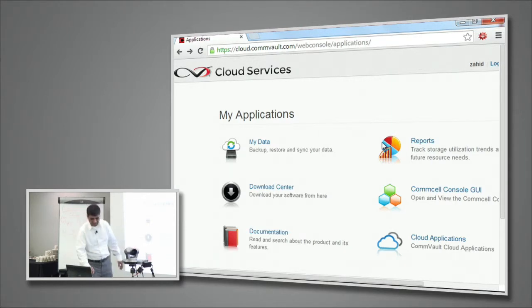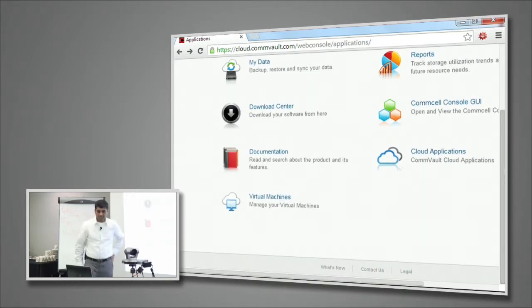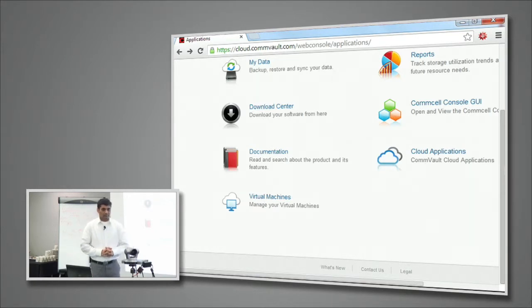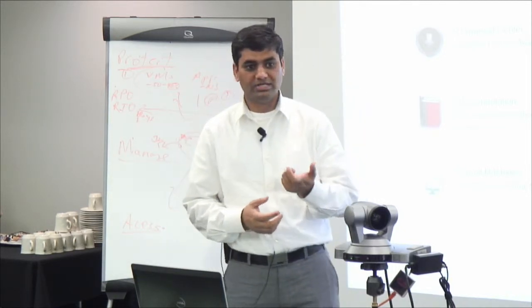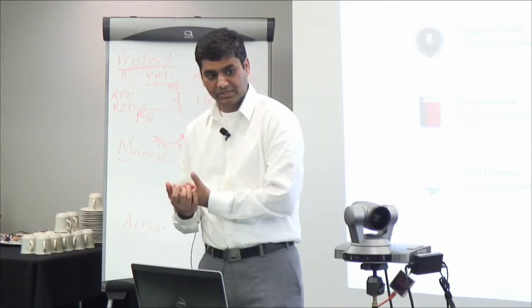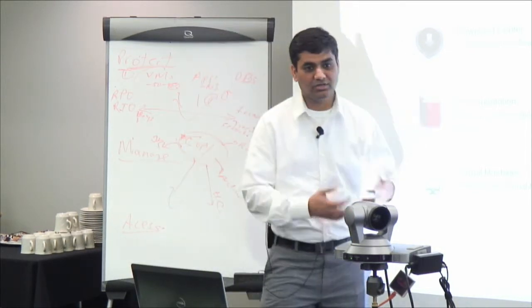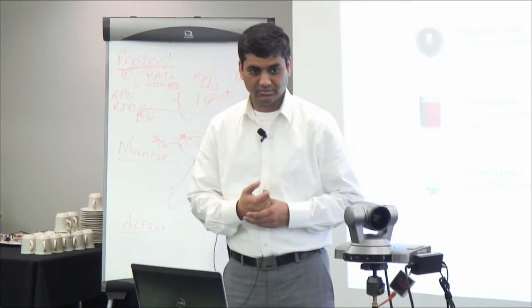Here are all the virtual machines — role-based access control is active directory based. We have provisioning mechanisms where once a virtual machine is created, we can pull ownership information and retain that inside this context. When somebody logs in using their AD profile, they'll only see the VMs or files they have access to.